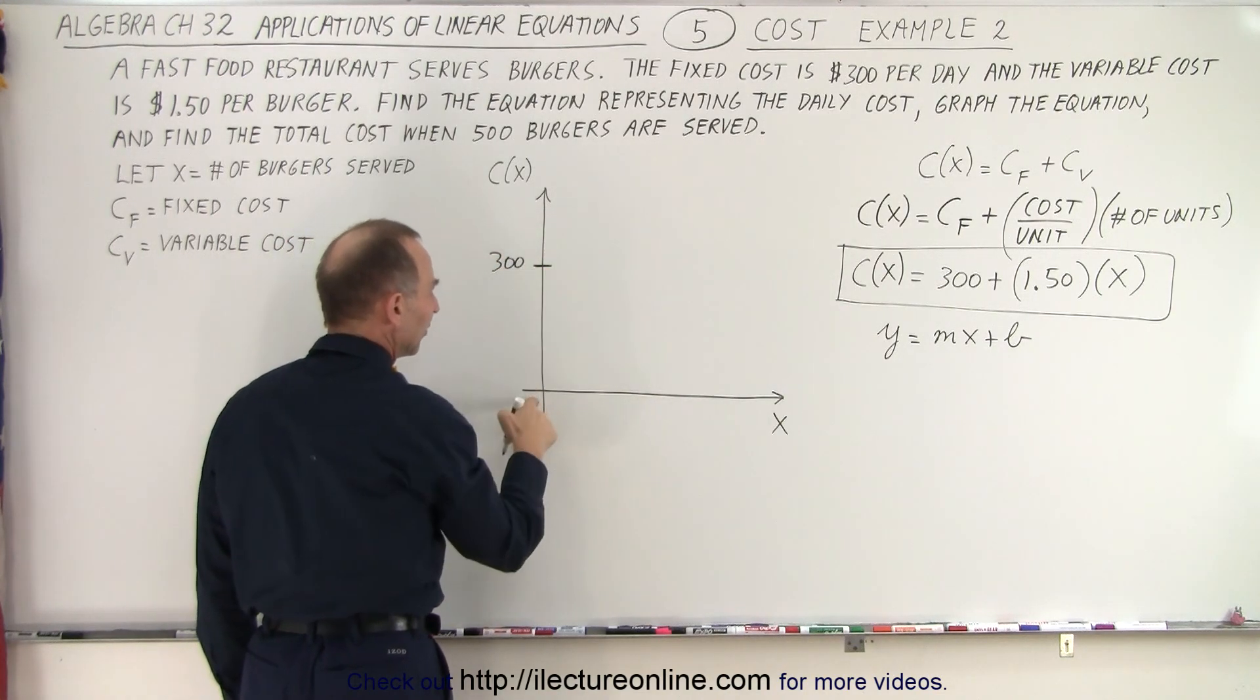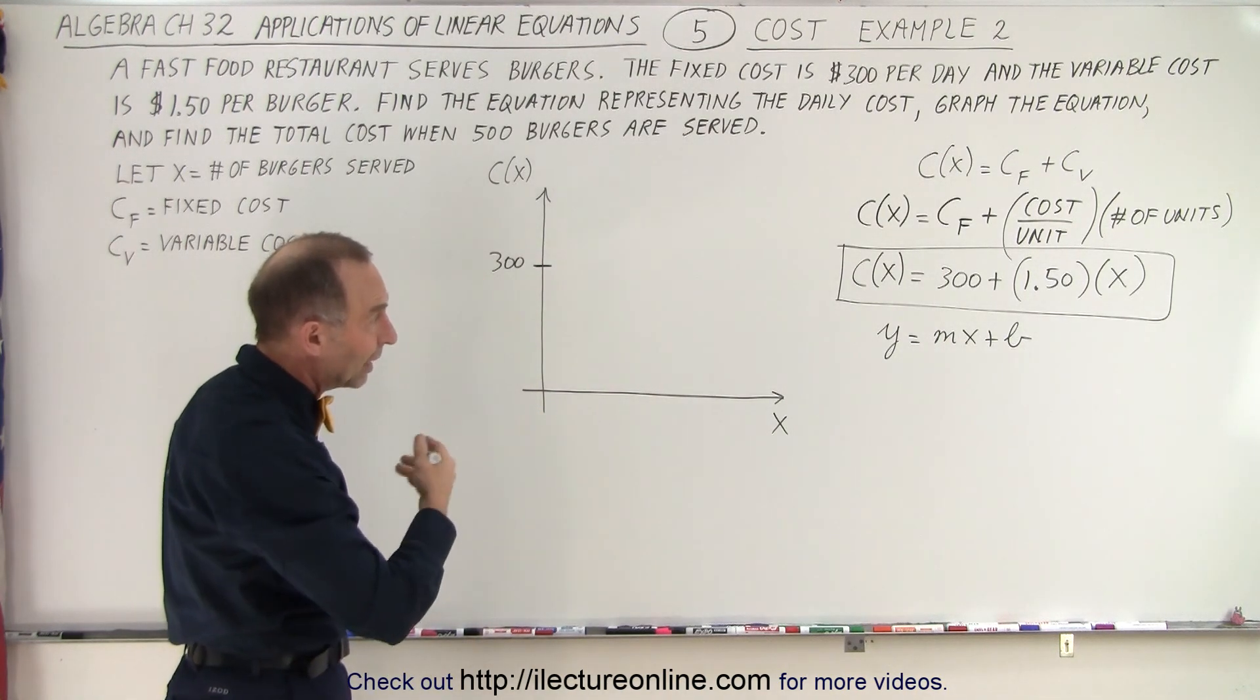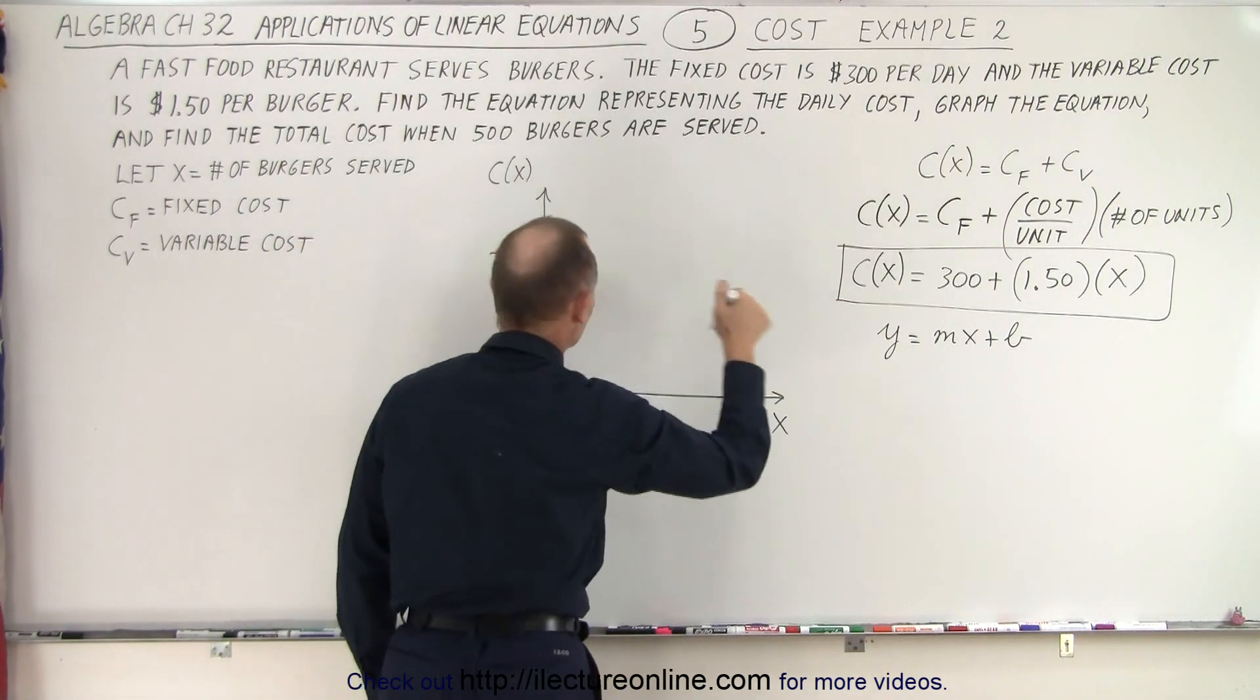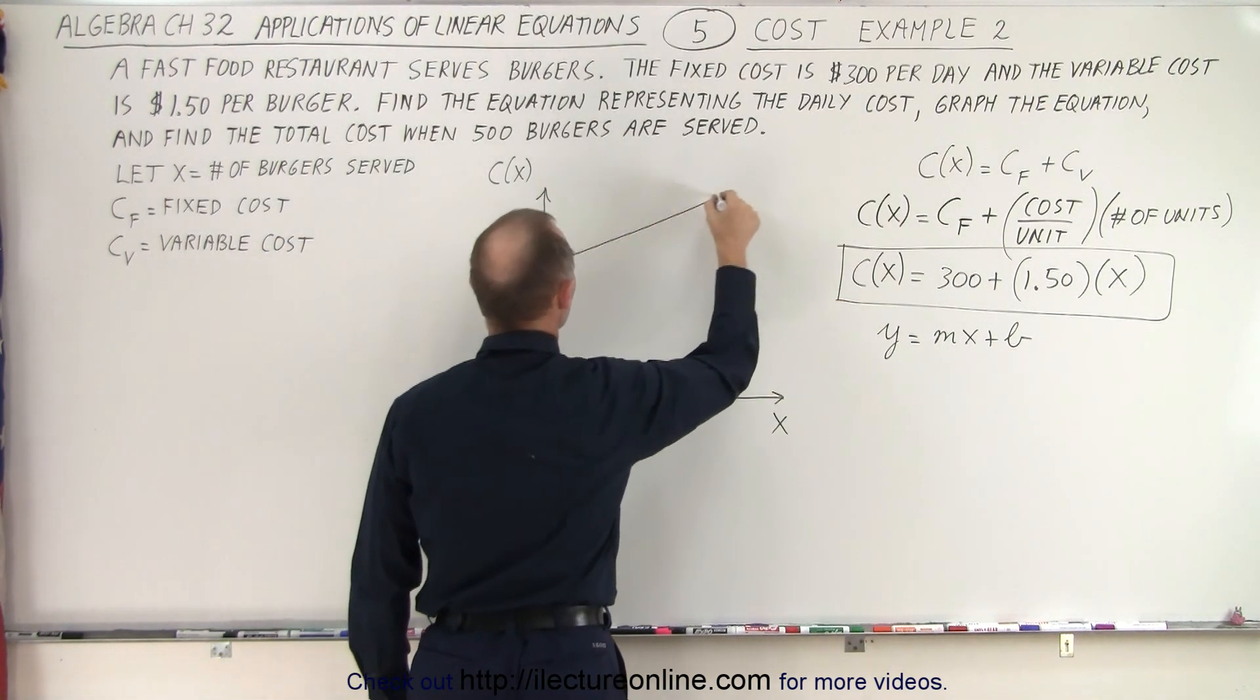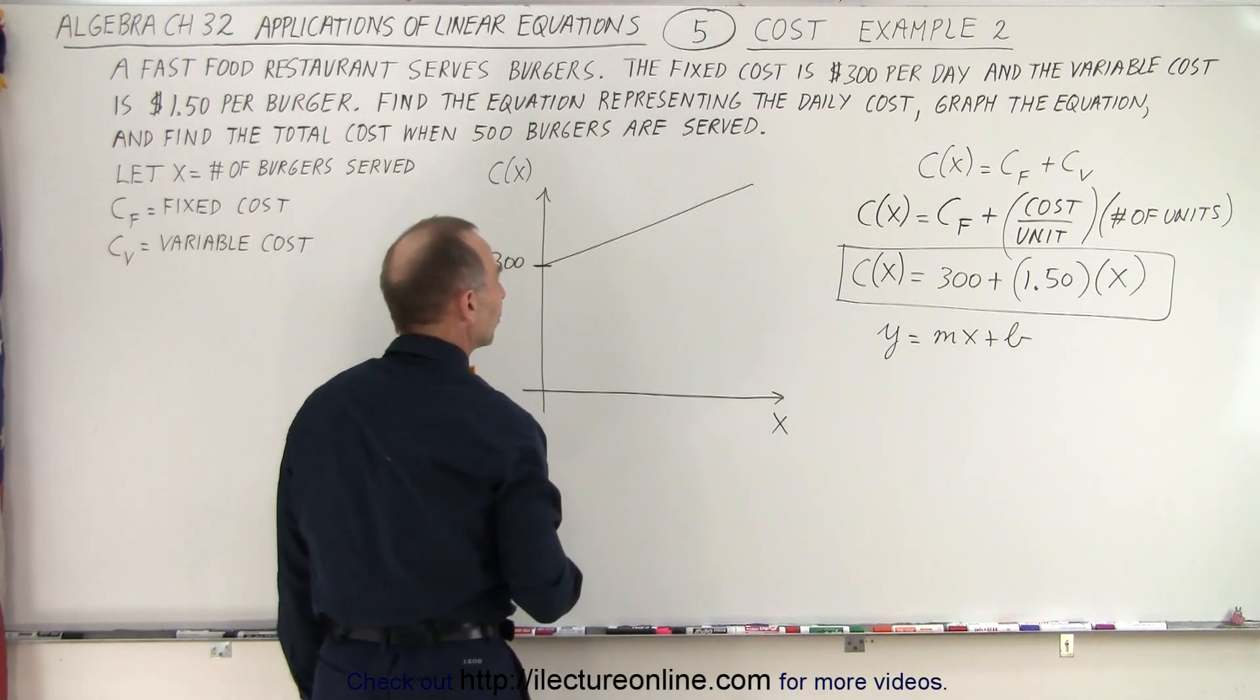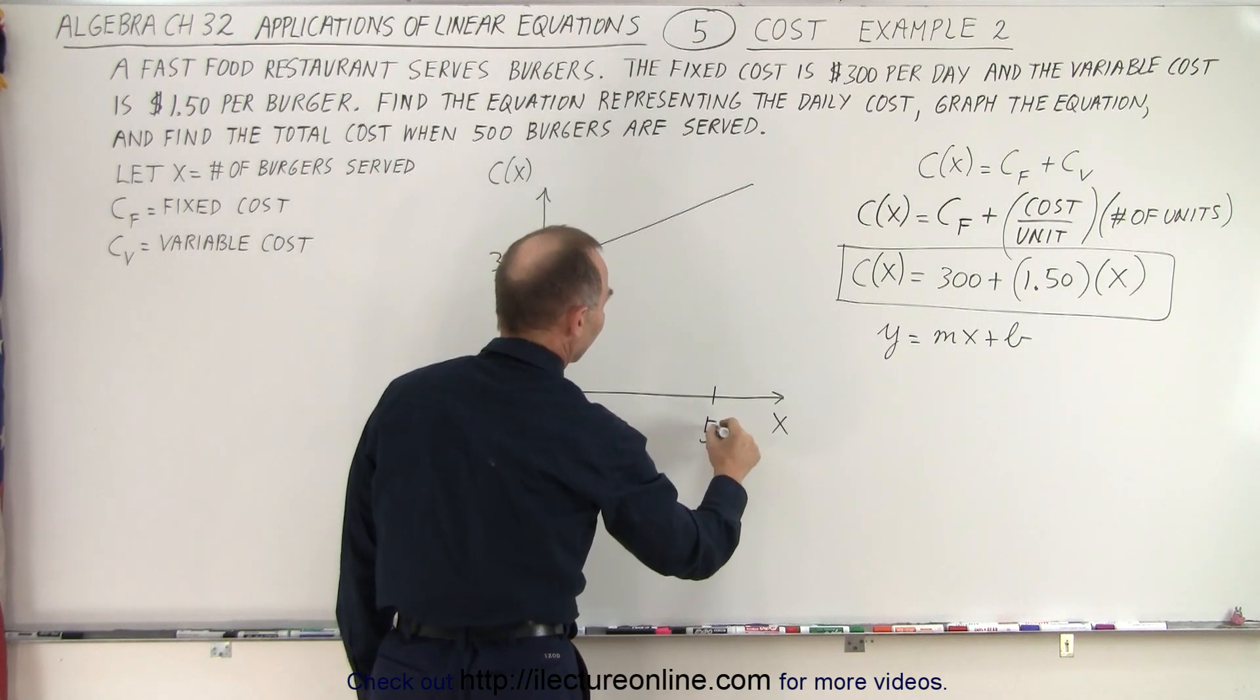That's how much we would have to pay even if no burgers were served that day. But then we have increased cost due to the number of burgers served. You can see that the slope is 1.5, so the slope goes up like this as the number of burgers served increases.